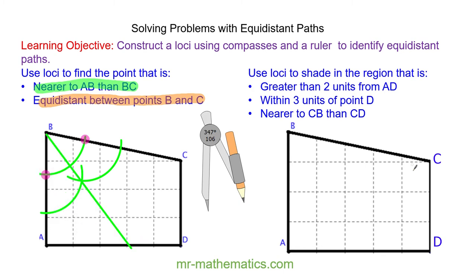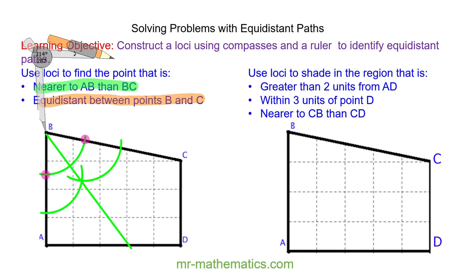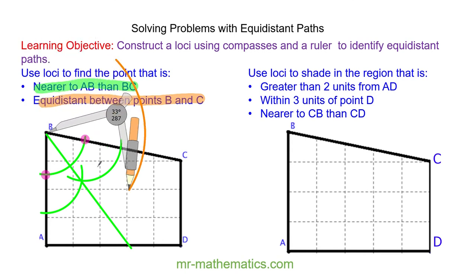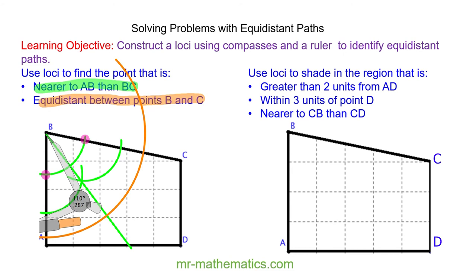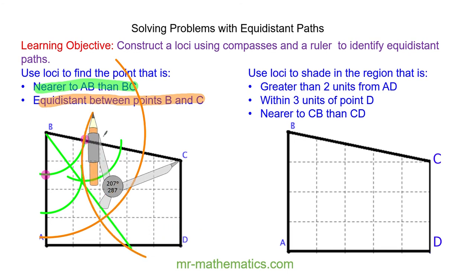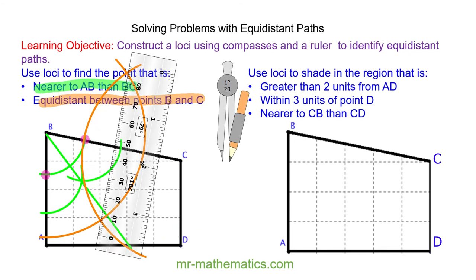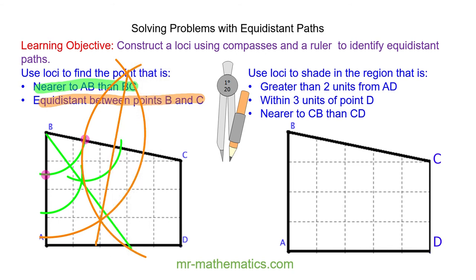To find the path that is equidistant between points B and C, I'm going to construct a perpendicular bisector of line BC. I open my compasses greater than half the length of BC and draw an arc above and below the line, then keep the radius the same and draw the same arc from C. Drawing a line through the two intersecting arcs gives the perpendicular bisector. The point that is nearer to AB than BC and equidistant between B and C is this point here.